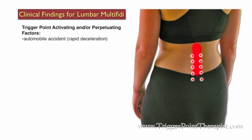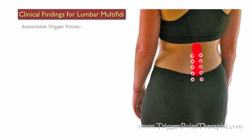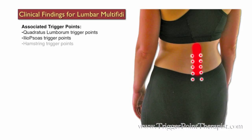Activating and perpetuating factors for these trigger points include automobile accidents, unaddressed trigger point activity in the larger muscle groups that move the lumbar spine, articular dysfunction, and a distorted lumbar lordosis or scoliosis. Trigger points in the quadratus lumborum, iliopsoas, and hamstring muscles are all associated with Lumbar Multifidi trigger points.